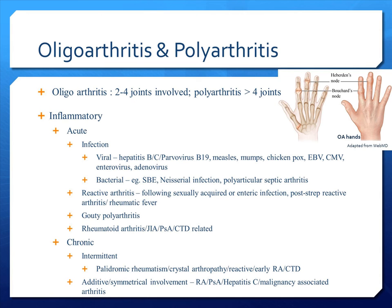When more joints are involved, the differential diagnosis gets wider. Again, we divide them into inflammatory versus non-inflammatory. Non-inflammatory involvement is often related to osteoarthritis. As for those with inflammatory joint pain, we can subdivide them into whether it's acute versus chronic. Those with acute inflammatory arthritis — we need to consider infection, reactive arthritis, gouty polyarthritis, rheumatoid arthritis, juvenile idiopathic arthritis, psoriatic arthritis, or connective tissue disease-related causes.